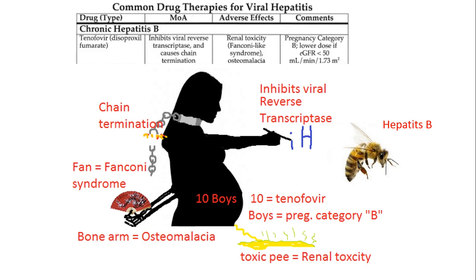Tenofovir's method of action is that it inhibits viral reverse transcriptase and causes chain termination. The adverse effects are renal toxicity, Fanconi-like syndrome, and osteomalacia. It's pregnancy category B — A is the most safe, B means it could be possibly unsafe but more testing would be needed — and lower dose at eGFR less than 50.